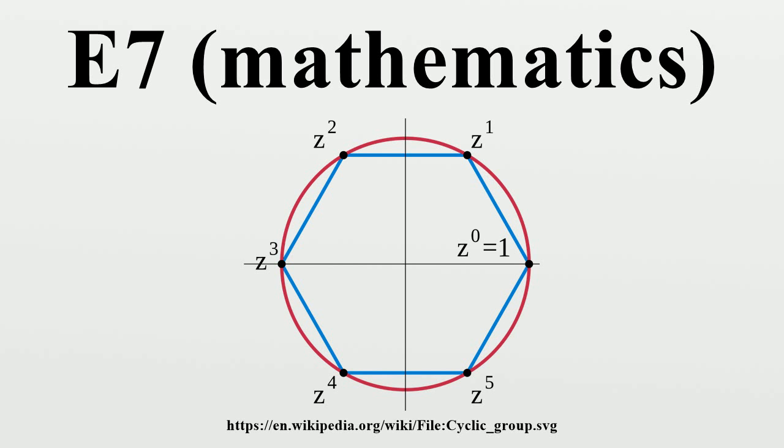There are four real forms of the Lie algebra, and correspondingly four real forms of the group with trivial center, all of real dimension 133, as follows. The compact form has fundamental group Z/2Z and trivial outer automorphism group.